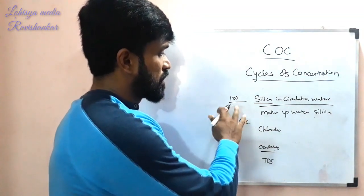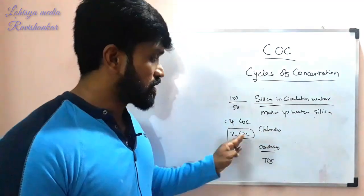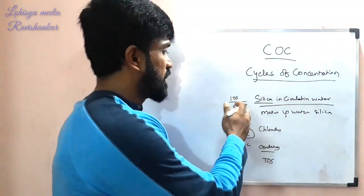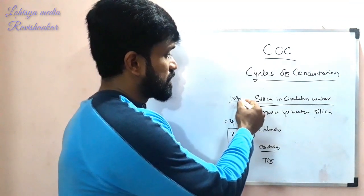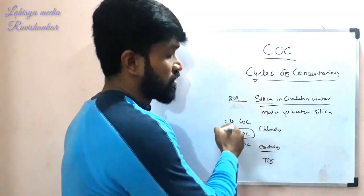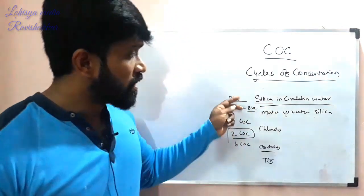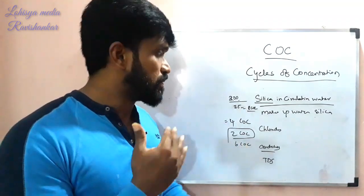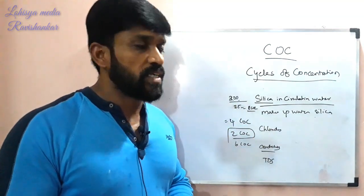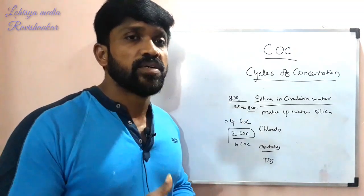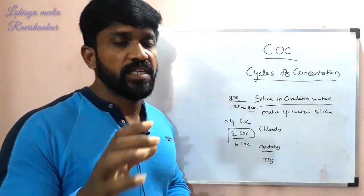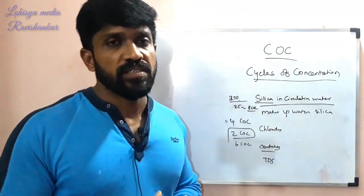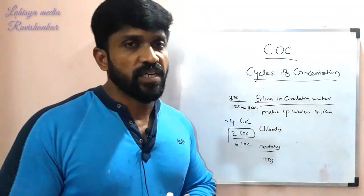Suppose chlorides give 2 COC and TDS gives 8 COC — you use the lowest value to determine the controlling parameter. If you operate at a COC of 3 to 8, you achieve efficient water savings. Maintaining higher cycles of concentration reduces water consumption significantly.